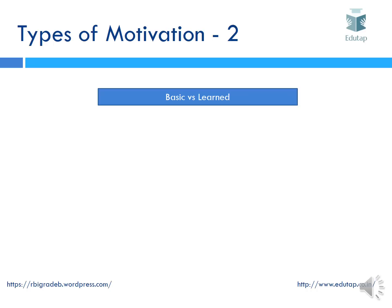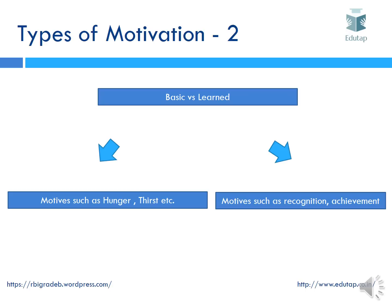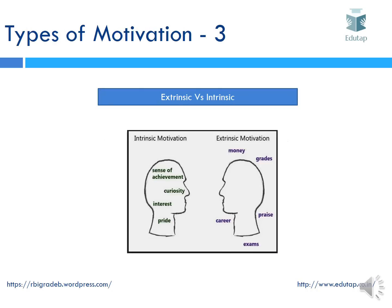The second type of motivation is basic versus learned. Basic motivation is instinctive — motives like hunger and thirst arise from within you. Learned motivation is what you learn over time, such as understanding that recognition and achievement are important. The third type is extrinsic versus intrinsic. Intrinsic motivation comes from inside and gives you internal satisfaction — like sense of achievement, curiosity, pride. Extrinsic motivation is something outside, for materialistic things like money, grades, or praise, and may not give you internal satisfaction.